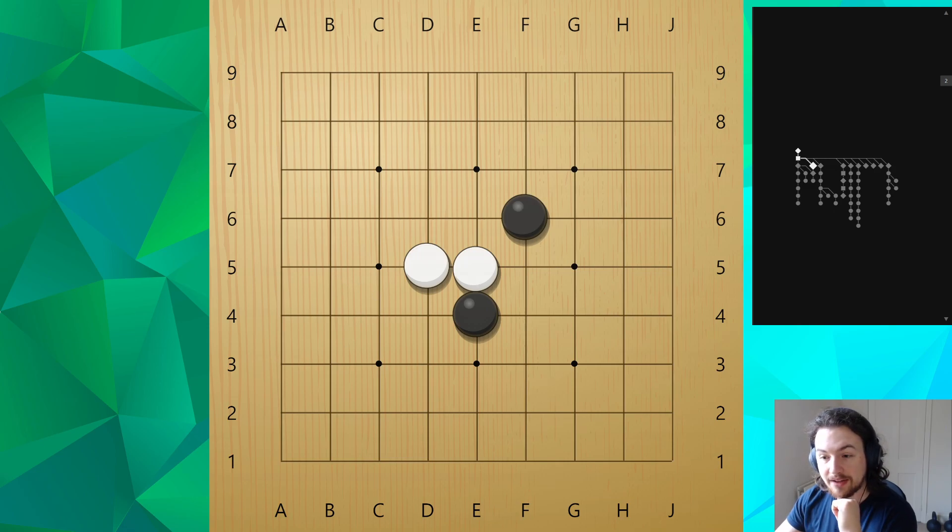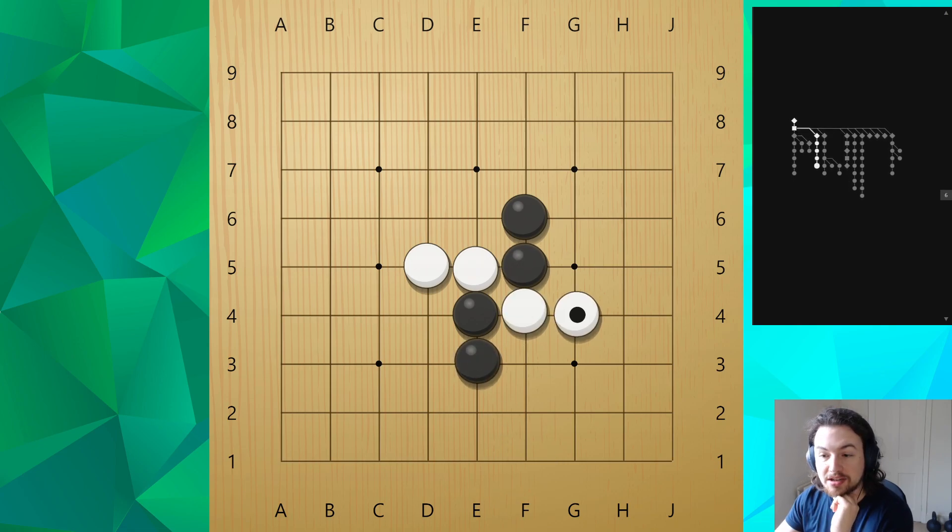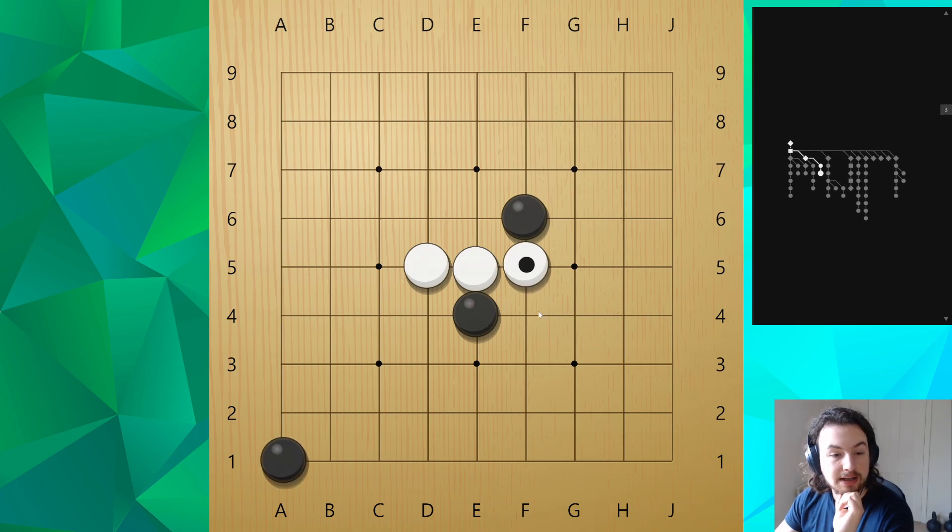Analogously, say we have a knight's move between black stones, where does black want to play now? Similarly black wants to block white. Say white comes through here. We might still create this pinwheel shape right here, but this is more what we're looking for rather than playing away and letting white come through the shape here.